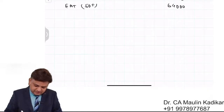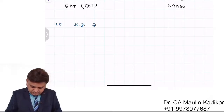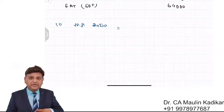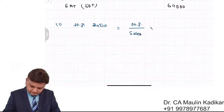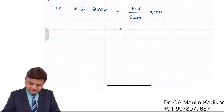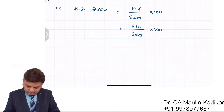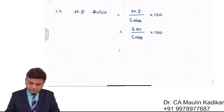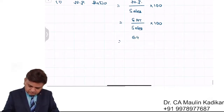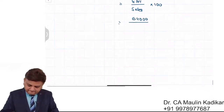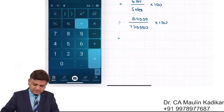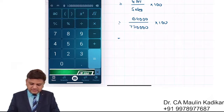Based on these working notes we calculate the final answers. The first question: net profit ratio is calculated as net profit upon sales into 100. Net profit is earning after taxes: Rs 64,000 divided by sales value of Rs 7 lakh 20,000 into 100. So 64,000 divided by 7,20,000 into 100 gives the answer 8.89%.